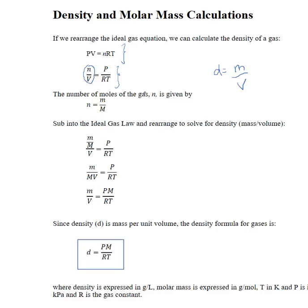Now we're getting close. I've got moles over volume, but I want mass over volume. So I need to use another known relationship, which is moles is equal to mass over molar mass. And what I'm going to do is substitute mass over molar mass in for my moles, and then clean this up and rearrange.